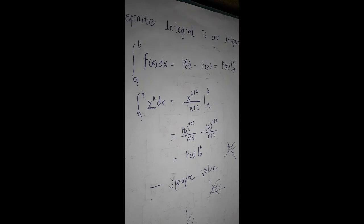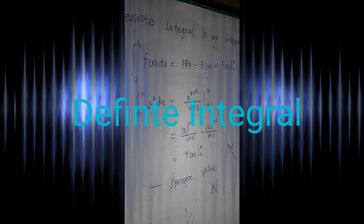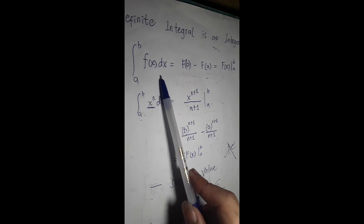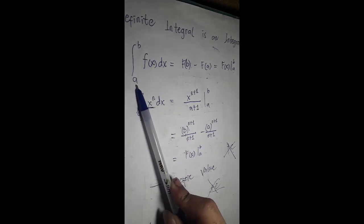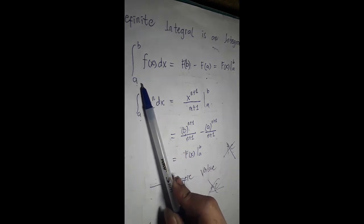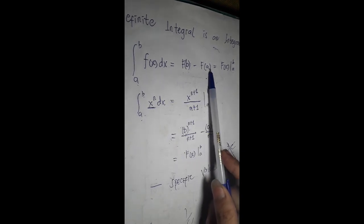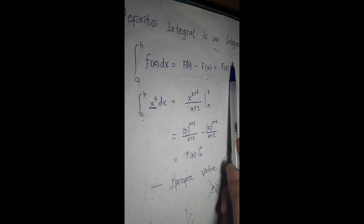In this video, we are going to discuss about the definite integral. Before we proceed to our problem, I would like to introduce first the formula of definite integral. We have the integral of f of x dx with the upper limit b and the lower limit a. This a and b represent any constant number, so that could be equals to f(b) minus f(a).